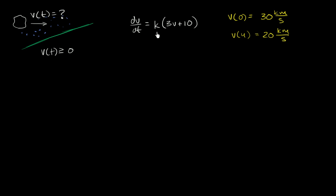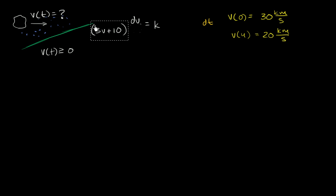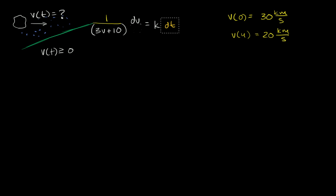Let's see if we can solve this differential equation. The easiest thing to start with is to multiply both sides by dt, so the dt on the left disappears and shows up on the right. Then we divide both sides by 3V plus 10. So we've rearranged the terms with a little algebraic manipulation: dV over (3V plus 10) equals K dt. Now I can integrate this. It's clearly a separable differential equation — all the V's are on one side and the constant is on the right. So now I'll integrate both sides.